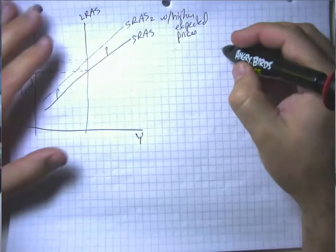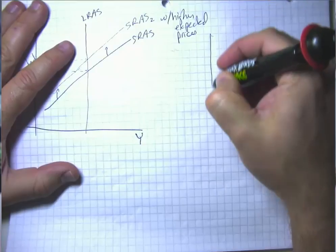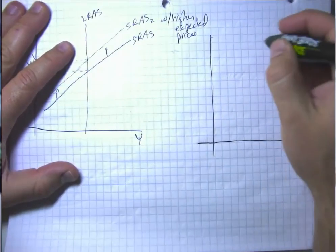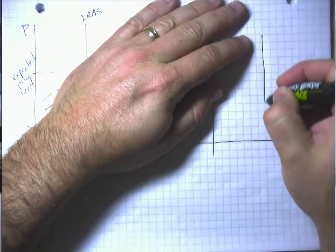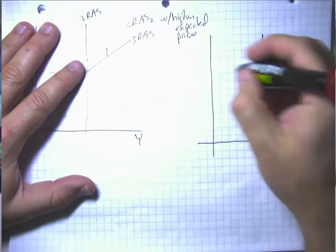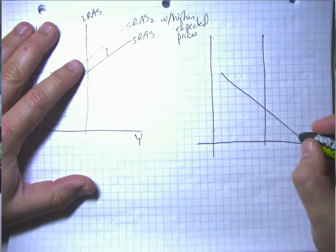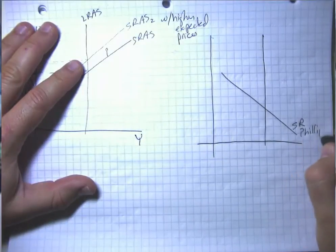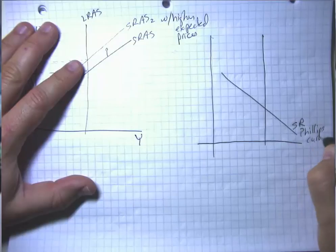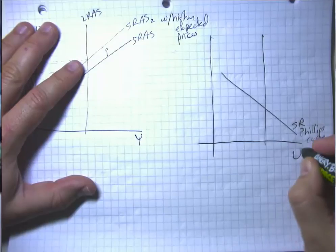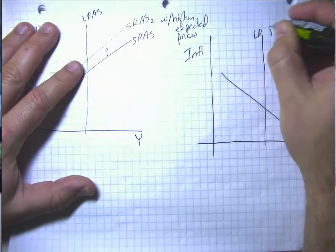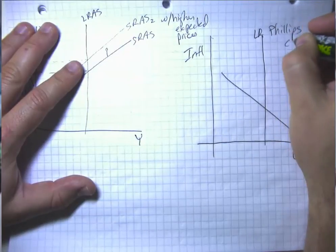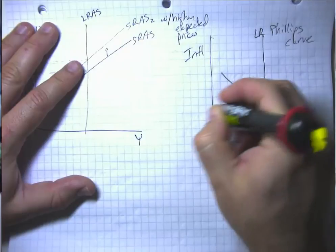The analogous idea in the Phillips curve model is that the short-run Phillips curve crosses the long-run Phillips curve at the expected inflation rate.